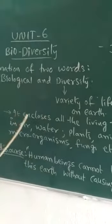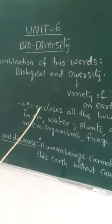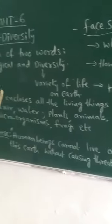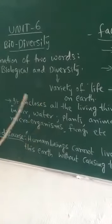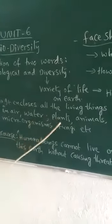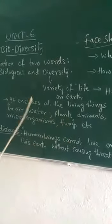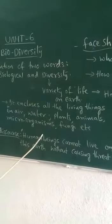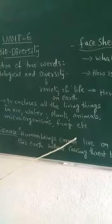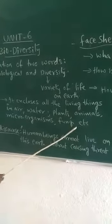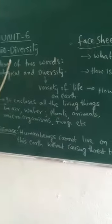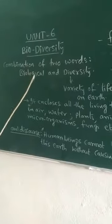Biodiversity completely encompasses all living things on the earth — in the air, in water. They may be plants, animals, microorganisms such as fungi, bacteria, algae, etc. So what is the relation of biodiversity to us?